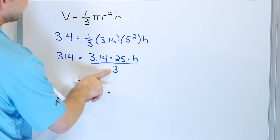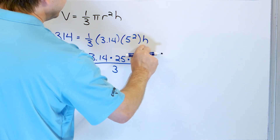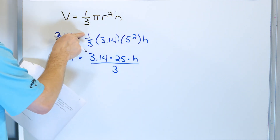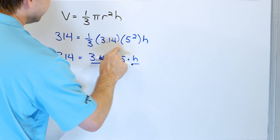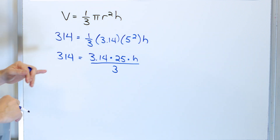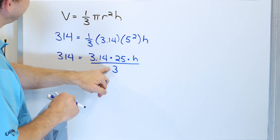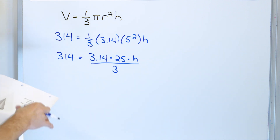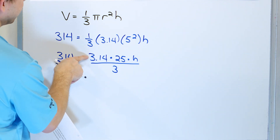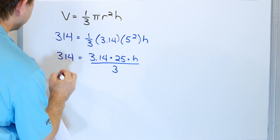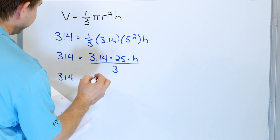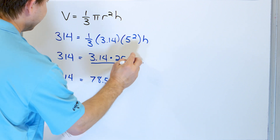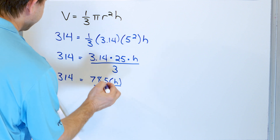That's the same thing as dividing by 3. You can think of these numbers and this variable being over 1, and the 3 times the 1 on the bottom gives this. Multiplying by one-third is the same thing as dividing by 3. Now I'm just going to multiply 3.14 times 25, which is 78.5, but I still have to multiply by h and then divide by 3.